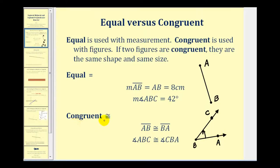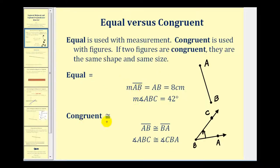However, when we're talking about congruent, notice that we're comparing geometric figures. We can say that segment AB is congruent to segment BA, and we can also say that angle ABC is congruent to angle CBA. Notice the vertex in both cases is point B. So again, the big difference is the equal sign is used for measurement, and congruence is used to compare geometric shapes or figures.